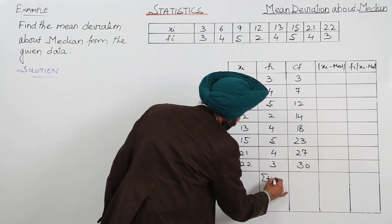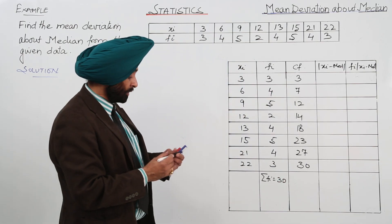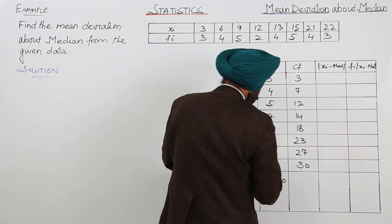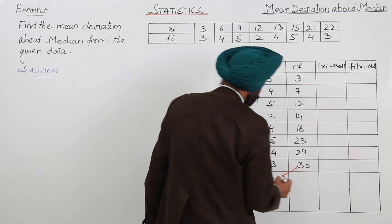Now summation for Fi is equal to 30. Now remember one thing. This one and this one should be equal.